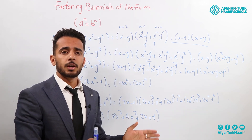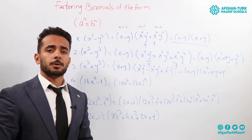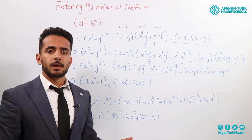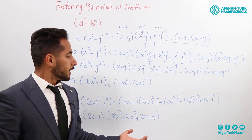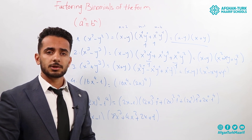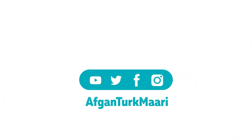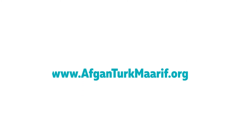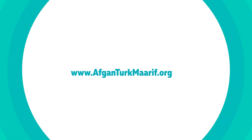This was the factorization of binomials of the form a to the power of n plus or minus b to the power of n — a branch of factoring by identities. If you have any questions or suggestions, just comment below. Thanks for watching.